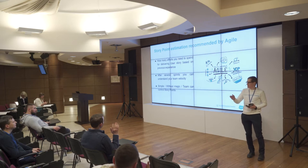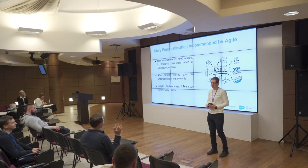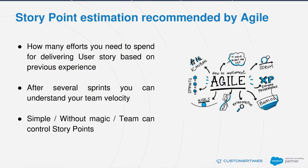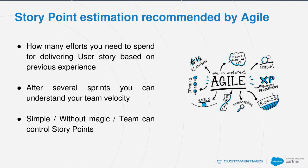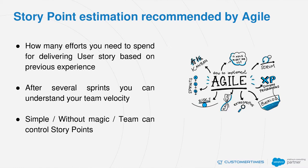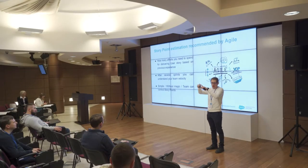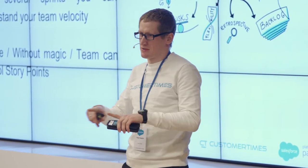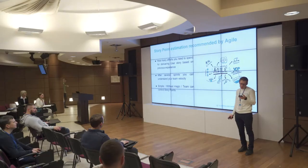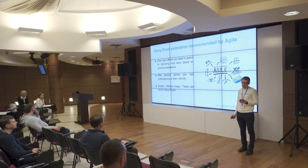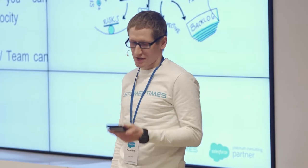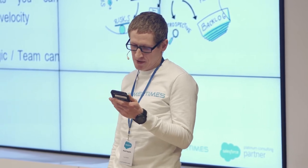Story points provide estimation that should not be accurate but consistent. We need to compare user stories to each other — for example, this user story is like an XL t-shirt, very large and complex, and this one is very small, like an S size t-shirt. When engineers estimate, they need to compare the story to other stories in the past in order to evaluate consistency.